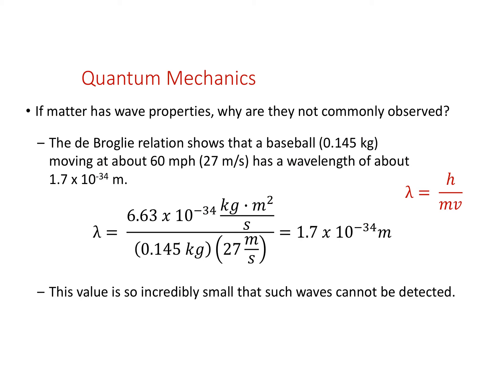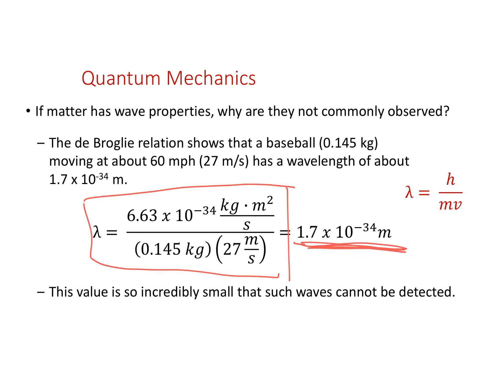Planck looked at the frequency a solid vibrates at and related it to energy. Einstein said light has frequency too, so he related that to the energy of light. De Broglie said: what about taking properties of matter — mass and velocity — and giving them some properties of light? Does matter have a wavelength? Using the de Broglie equation, consider something on our scale like a baseball thrown at about 60 miles per hour — 27 meters per second. That baseball does have a wavelength associated with it, but it's incredibly small: 1.7 times 10 to the minus 34 meters.